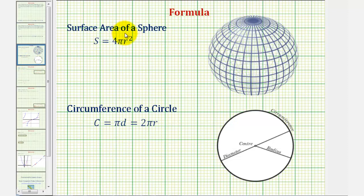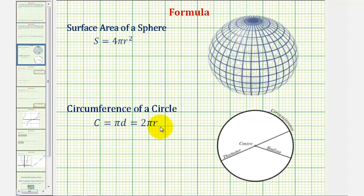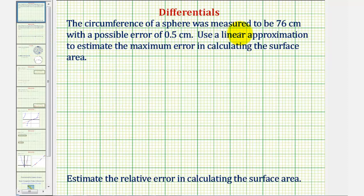The surface area of a sphere is equal to 4πr², and the circumference of a circle — which is the perimeter of the circle — is equal to πd or 2πr. So the surface area of a sphere is 4πr² and the circumference is 2πr.